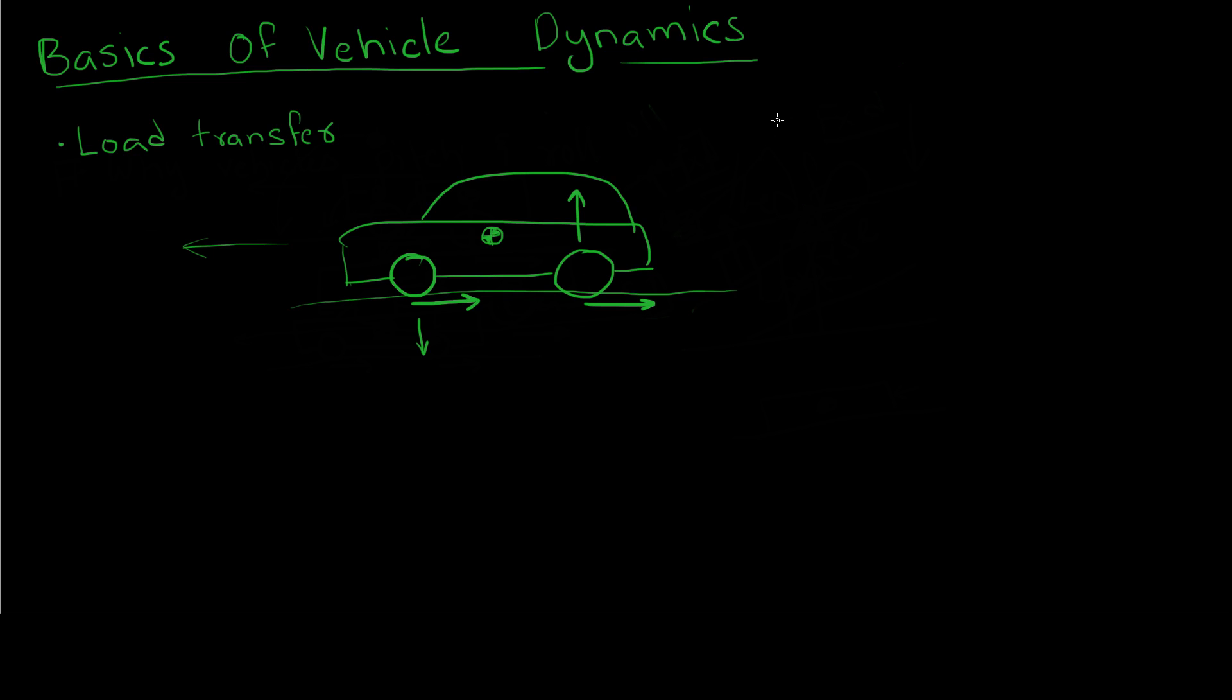So what this means is that essentially, if we imagine that this one initially had a 50-50 weight distribution, so let's say it had 50 units of weight on the front and 50 units of weight on the back, now there's going to be greater than 50 units on the front and less than 50 units on the back, because the load is being transferred to the front tire.